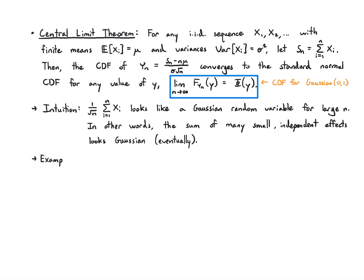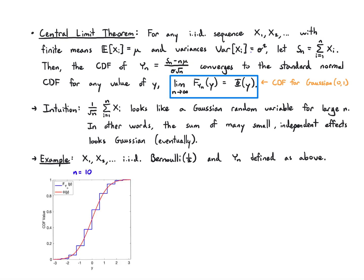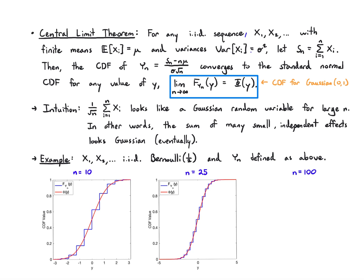Let's look at this visually. We'll go back to the same example with X1, X2, and so on IID Bernoulli one-half, and define YN exactly as above — their sum minus N times the mean, divided by their standard deviation times root N. For N equals 10, here's a plot of the CDF of YN alongside the standard normal CDF for Gaussian(0,1). You can see it traces through but they do deviate a little bit. At N equals 25, it's a much better approximation. And at N equals 100, it's hard to see the difference — you can quickly imagine that as N goes to infinity, the CDF of YN converges to Phi of Y.